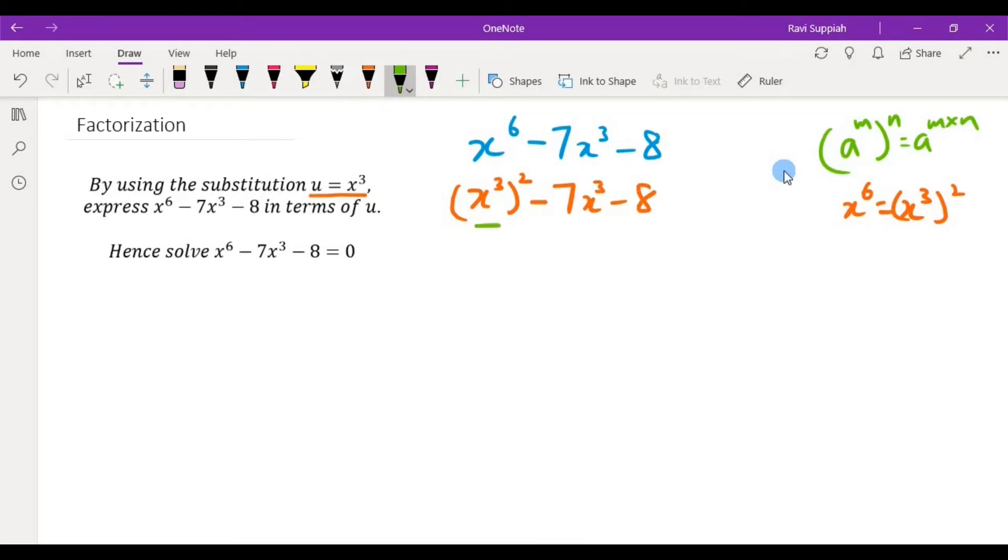So now we can see the x cubed and x cubed very clearly and we can rewrite this expression as u squared minus 7u minus 8.